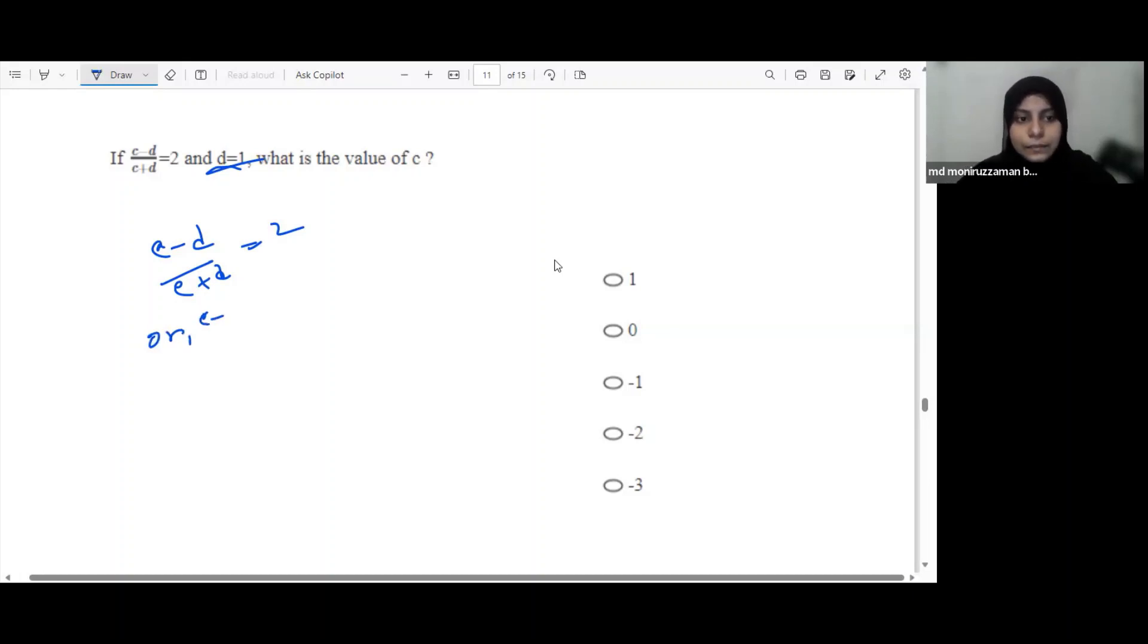c minus d equals to 2 times c plus d, or c minus d equals to 2c plus 2d. Now moving terms, c minus 2c, changing sides, c minus 2c - basic math.